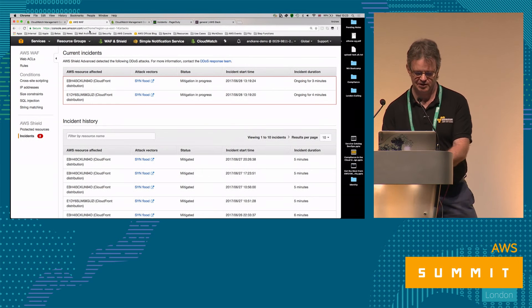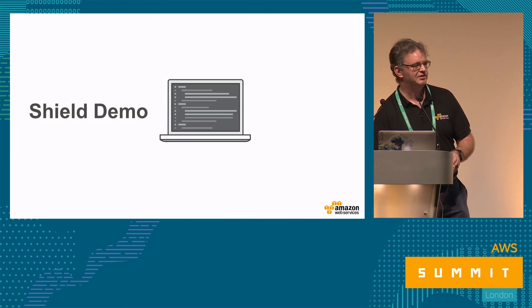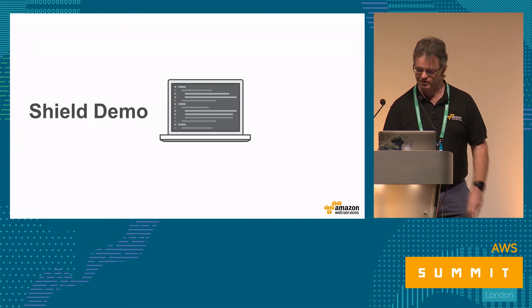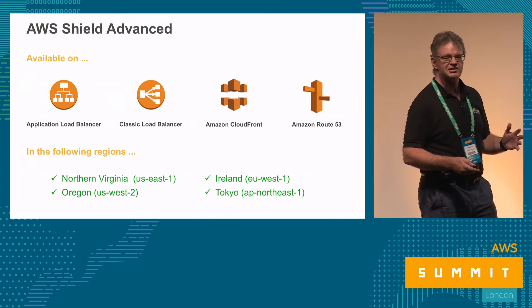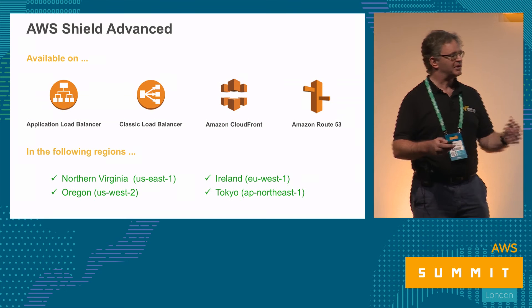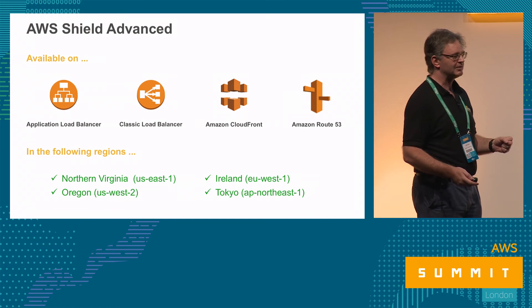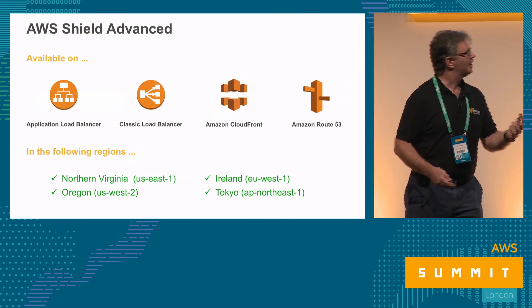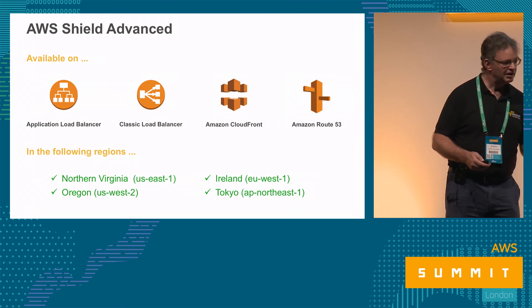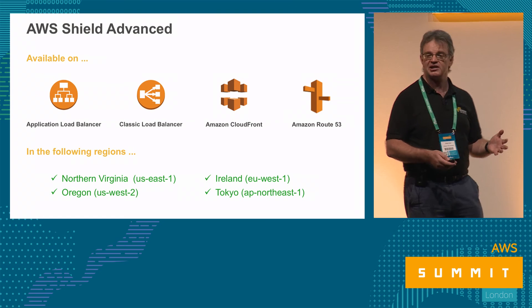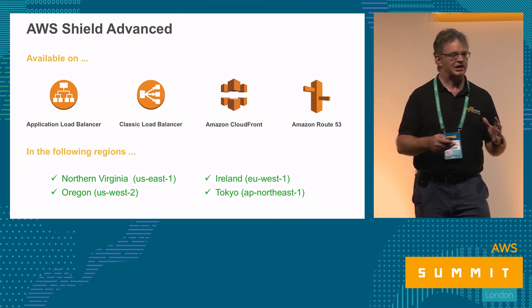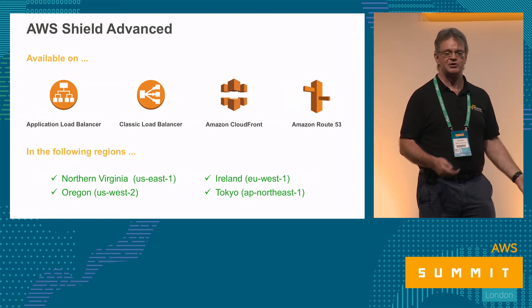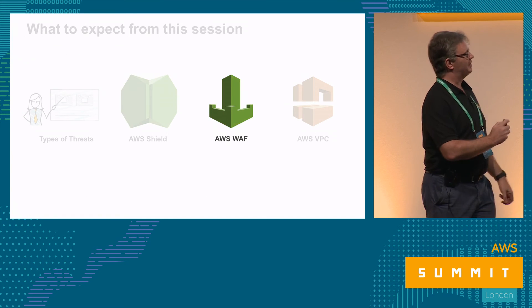Shield Advanced is available on four services — most focus is on CloudFront because that's where most resiliency and mitigation techniques live. If you can front your application stack with CloudFront, that's the best way to get the maximum amount of mitigation. It's also available on Application Load Balancers and Amazon Route 53. Currently available in four regions: US East, US West, EU Ireland, and APAC Tokyo. CloudFront itself is a global service, so if you have CloudFront in front of your application regardless of where it lives, you get DDoS mitigation anyway.